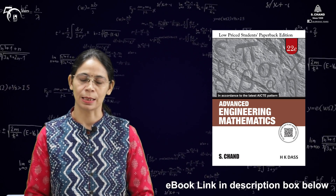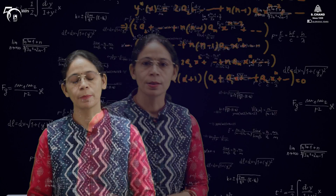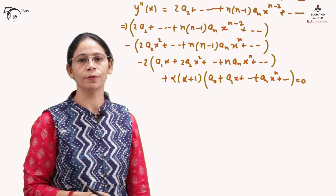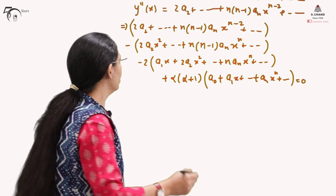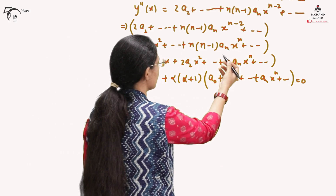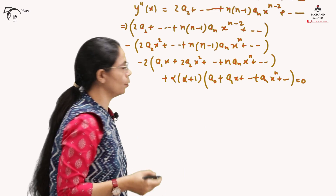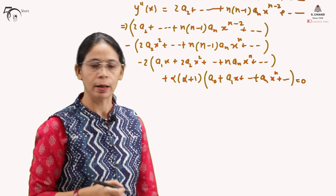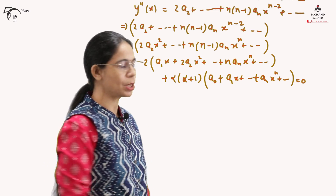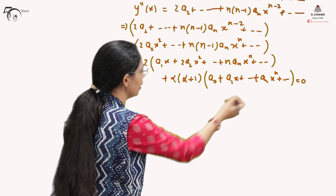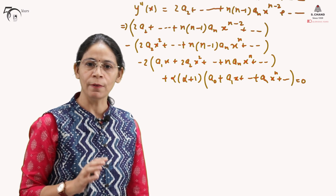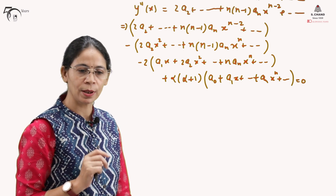This is the expression we have written for the expanded part of the series solution. We can see that this portion corresponds to y-double-dash, this corresponds to minus x-squared y-double-dash, this corresponds to minus 2x y-dash, and this corresponds to alpha into alpha plus 1 times y. Now we need to find out the values of the constants.